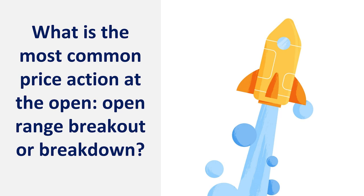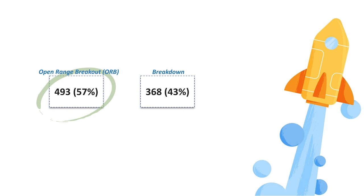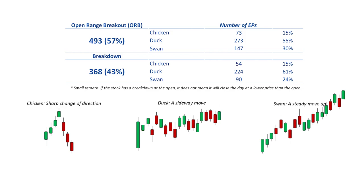Next question: what is the most common price action at the open — is it open range breakout or breakdown? In 57% of the cases it's actually an open range breakout — the stock moves higher — and 43% it's a breakdown. This is good news because that means in 57% of the cases, right after the open, the stock will continue step by step and have the energy to move upwards. This can be used as a significant trading edge, as the stock will gain a percentage in a short period of time, and can also serve as a buffer later.